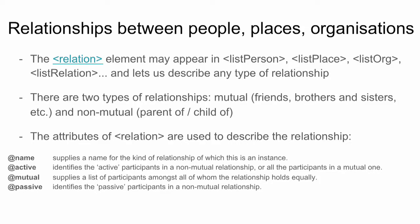Another important element that you can describe is the kind of relationships that exist between people, places, and organisations. We can do that with the relation element, which may appear within list person, list place, list org, or a specially created list relation. With this relation element you can describe any kind of relation between a person, place, or other types of elements.